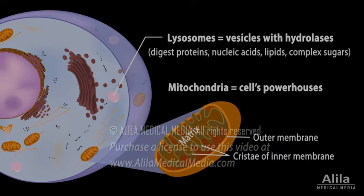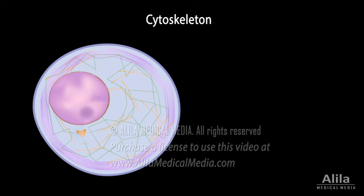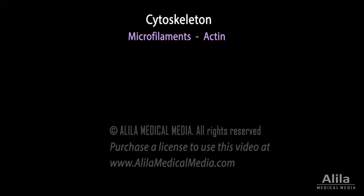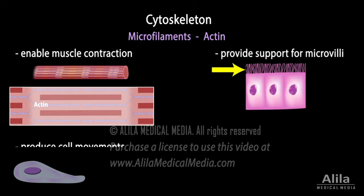The cytoskeleton is a network of protein filaments that fulfill a variety of functions, with three types of filaments: microfilaments, intermediate filaments, and microtubules. Microfilaments are made of the protein actin. They enable muscle contraction, provide support for microvilli, produce cell movements, and play a role in cell division.